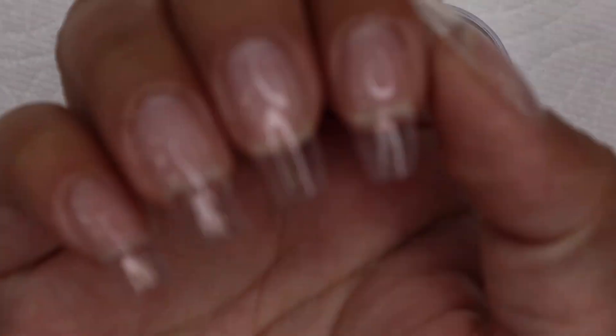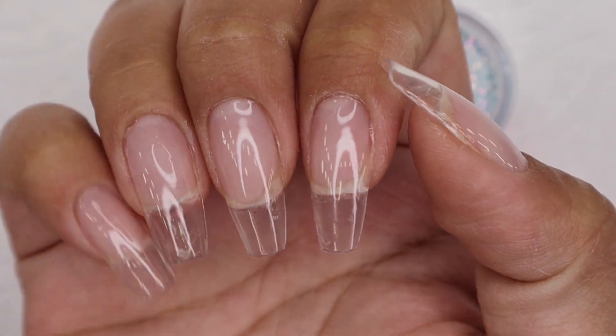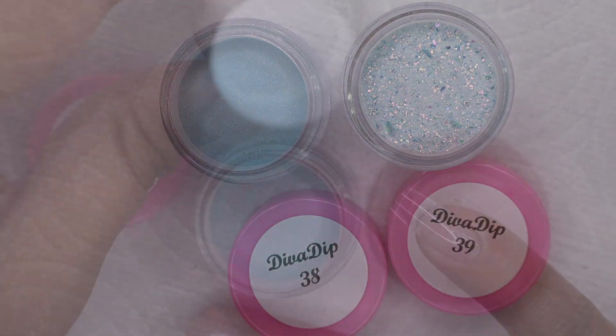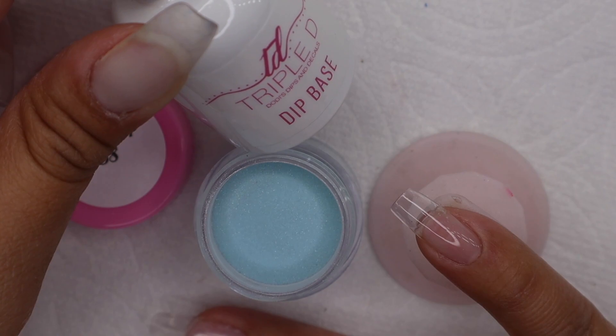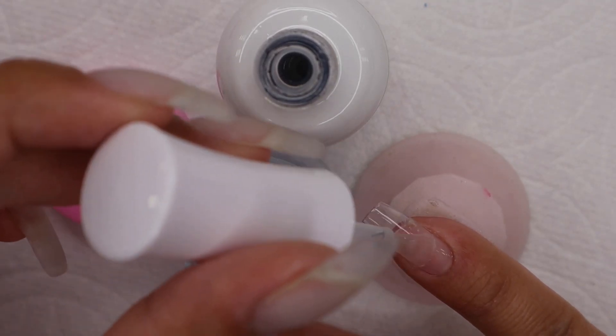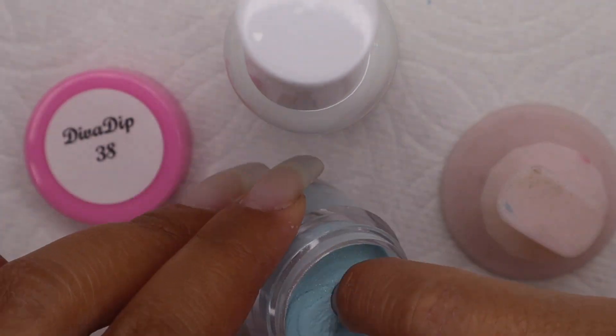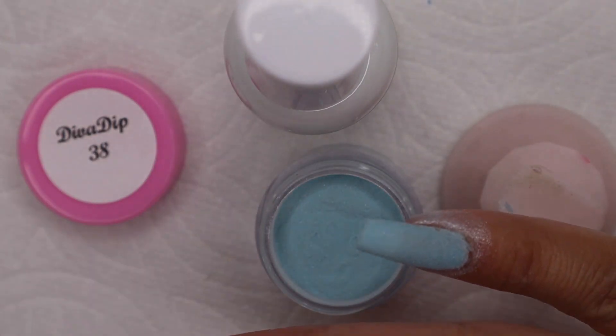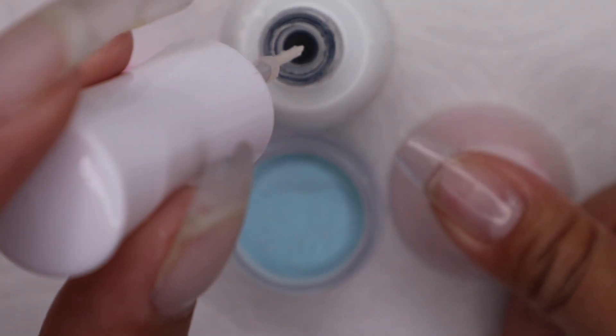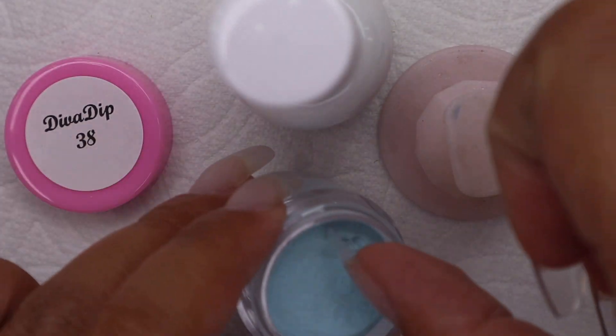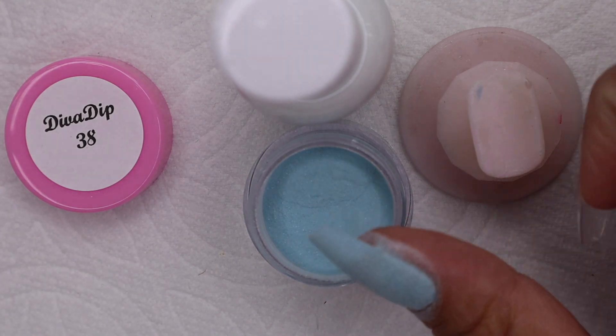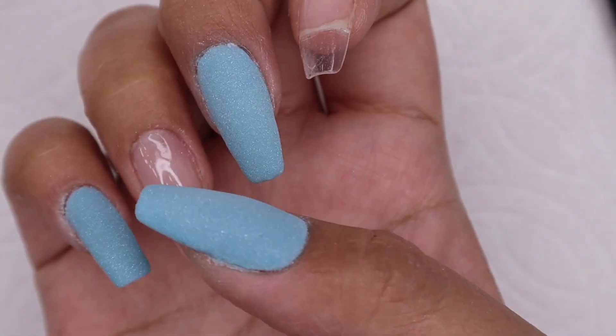Now I am going to apply these two colors. I chose Diva Dip 38 and 39. I'm going to apply Diva Dip 38 first on my thumb, middle finger, and pinky finger. I'm going to do two layers. This is after I applied that color.